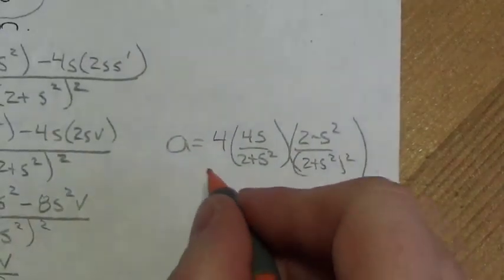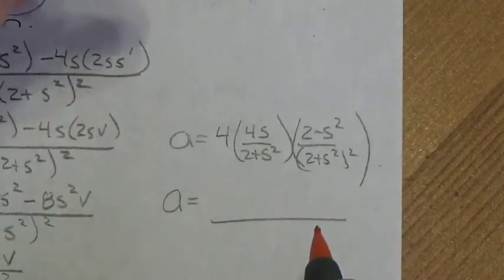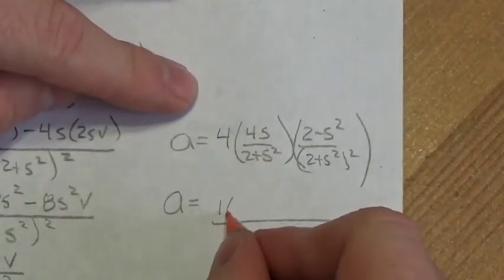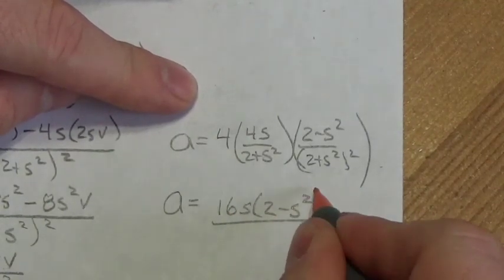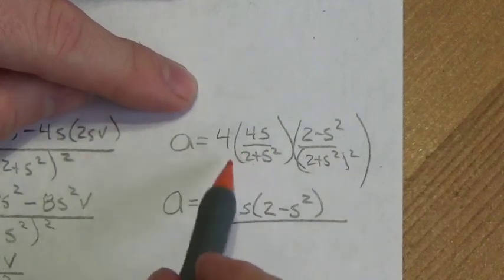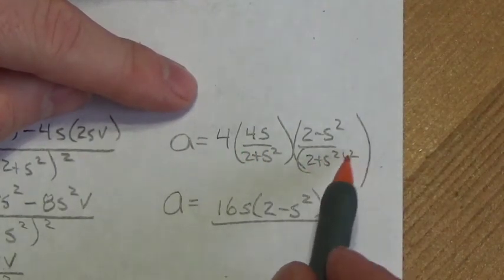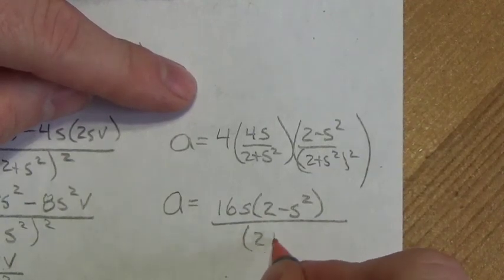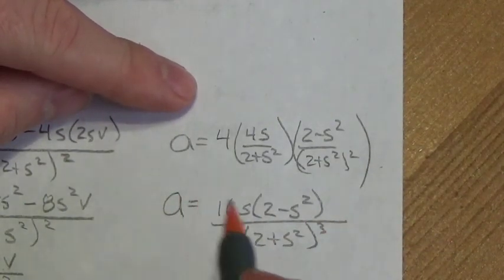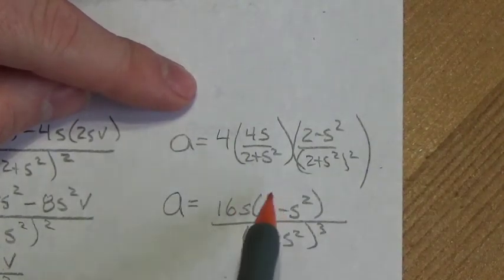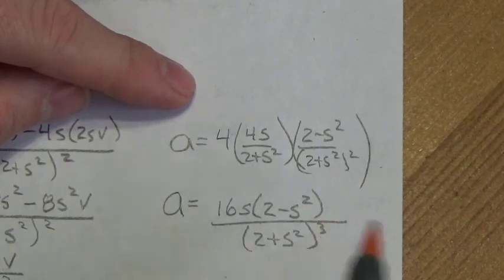So my acceleration becomes 4 times [4s over (2 + s²)] multiplied by [(2 − s²) over (2 + s²) squared]. This gives 16s(2 − s²) in the numerator. In the denominator, there are three identical factors of (2 + s²). So acceleration equals 16s(2 − s²) over (2 + s²) cubed.